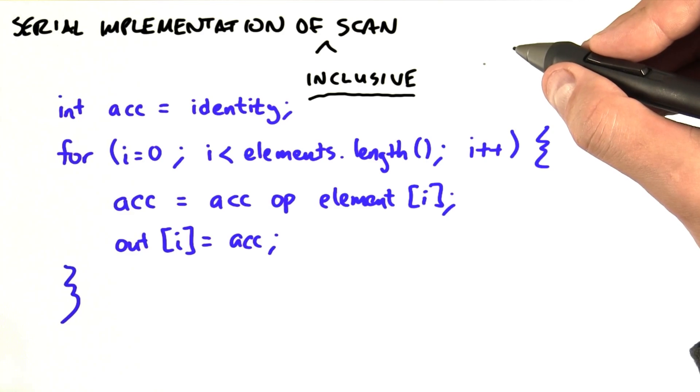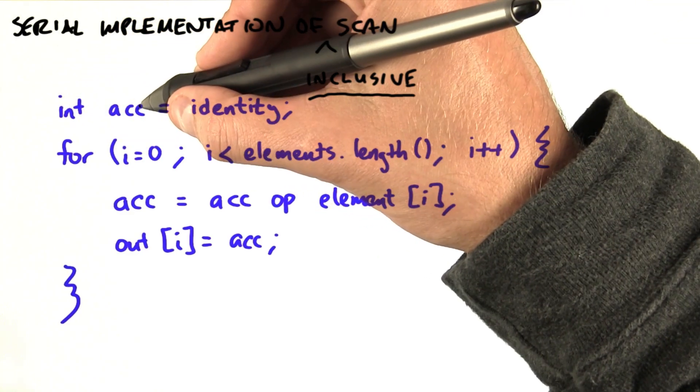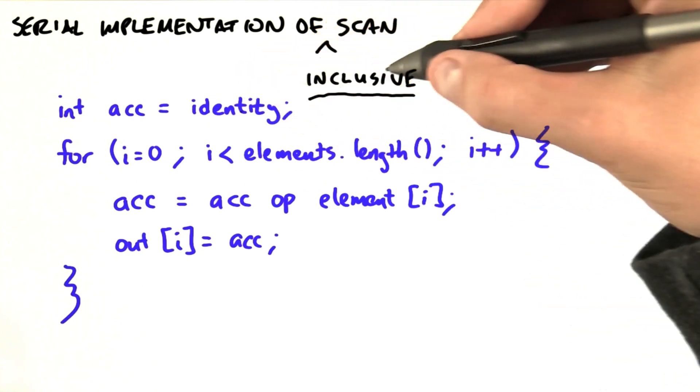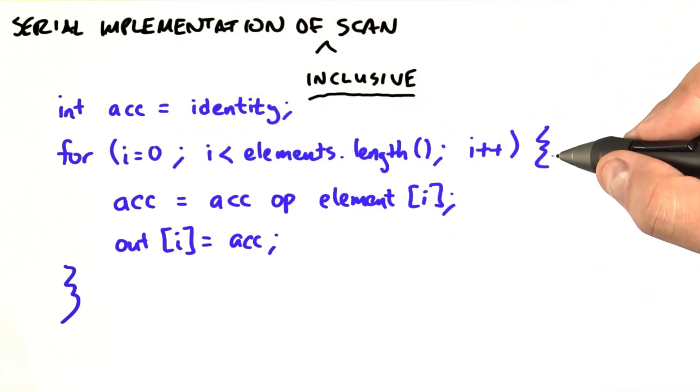So let me tell you how this works. We start off by initializing an accumulator variable that's going to sum our partial results to the identity element. And then we're going to loop through all the elements in our input array, one at a time.